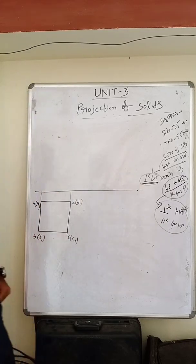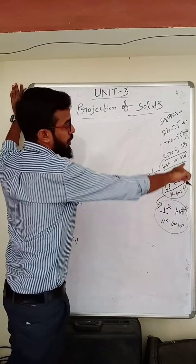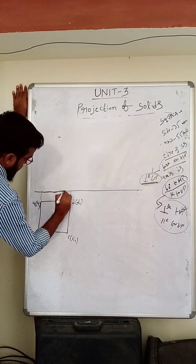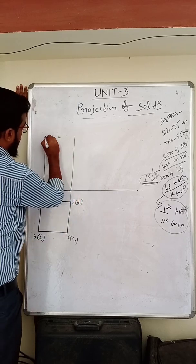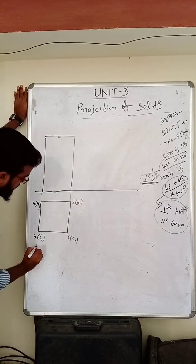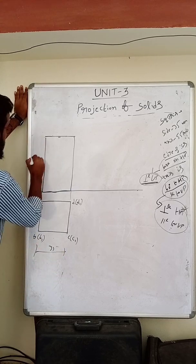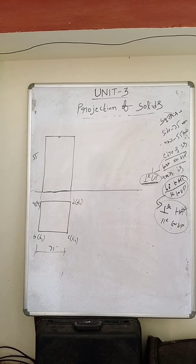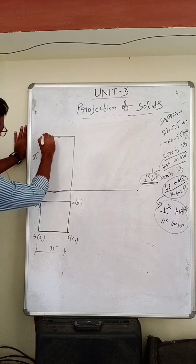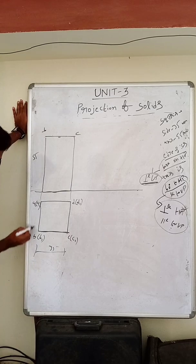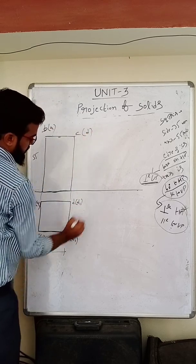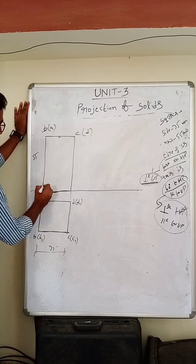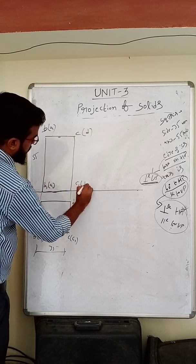Now what about the front view? The front view is a rectangle. Draw the front view, taking a point on HP at the reference line. The height of the square prism — that is the axis — is 55mm. The side is 35 and the axis is 55mm. The front view points are: B (brackets A), C (brackets D), B1 (brackets A1), C1 (brackets D1).